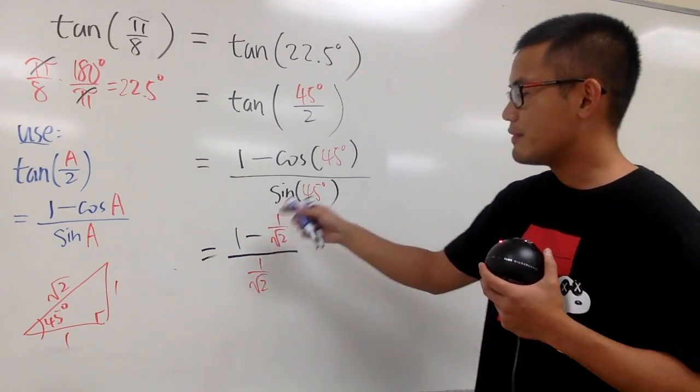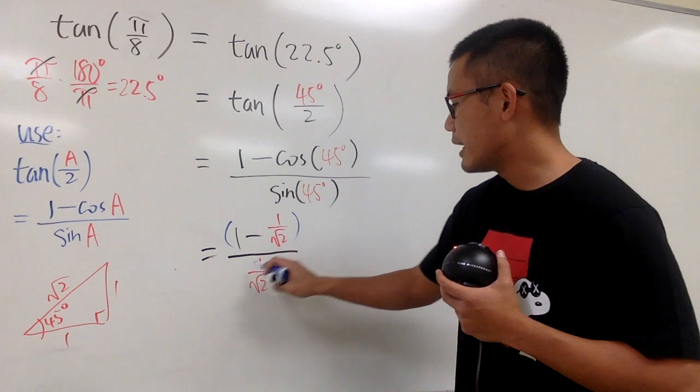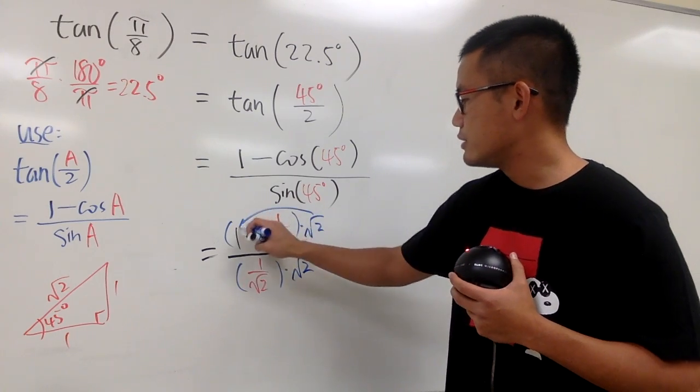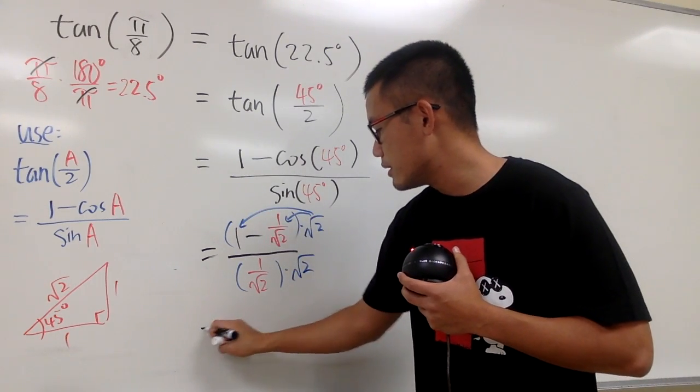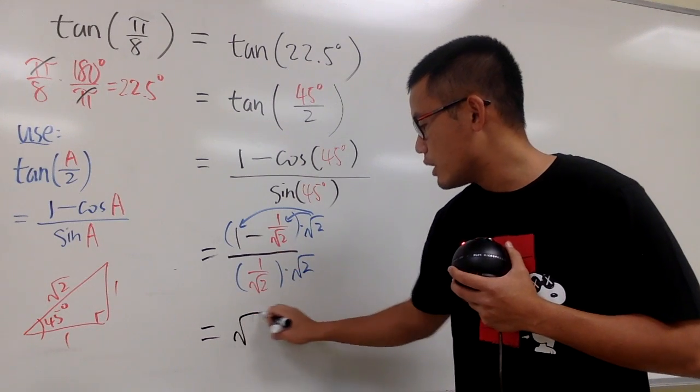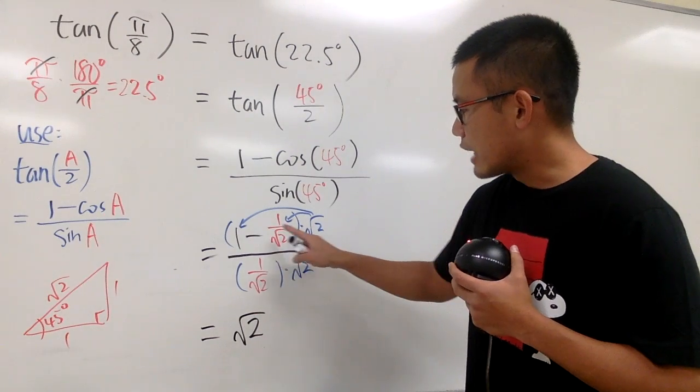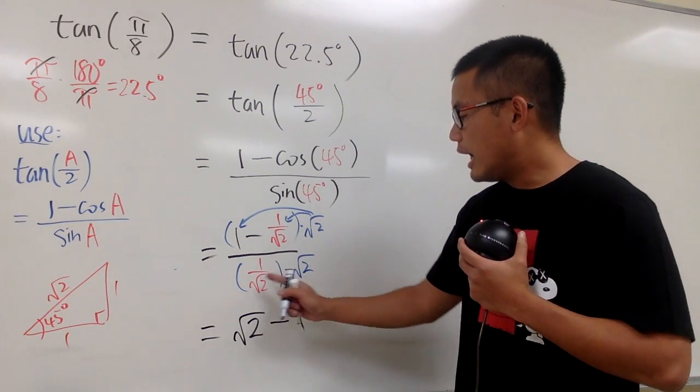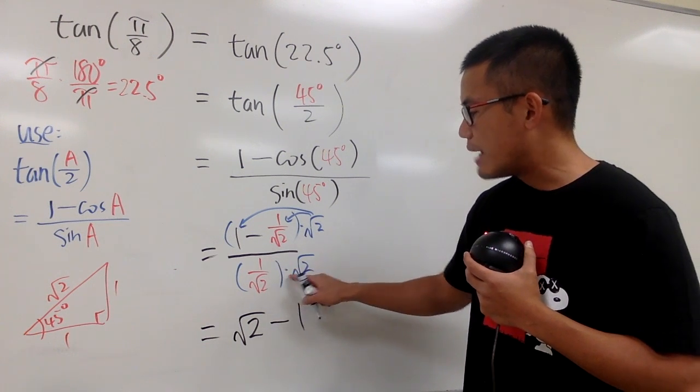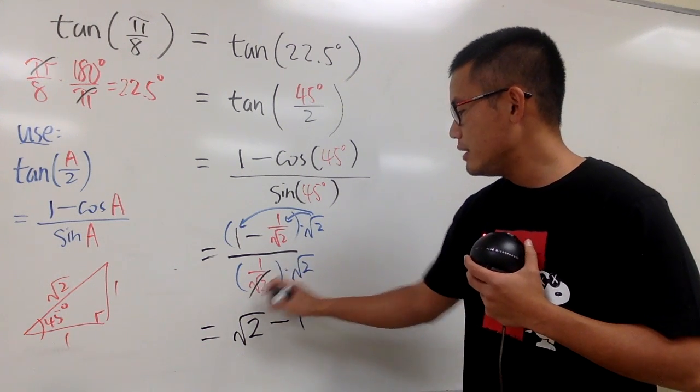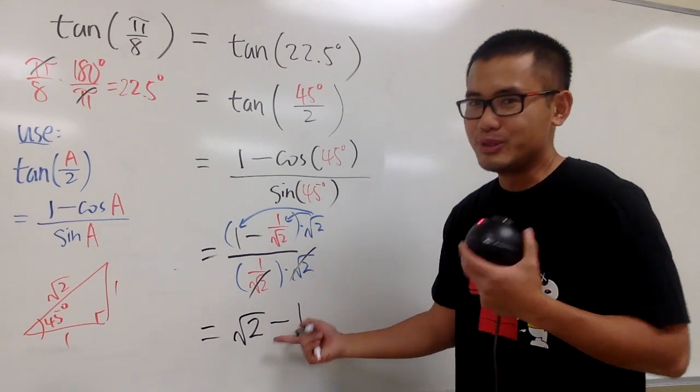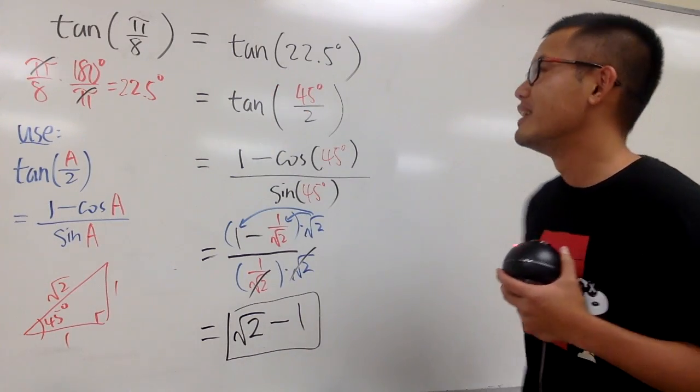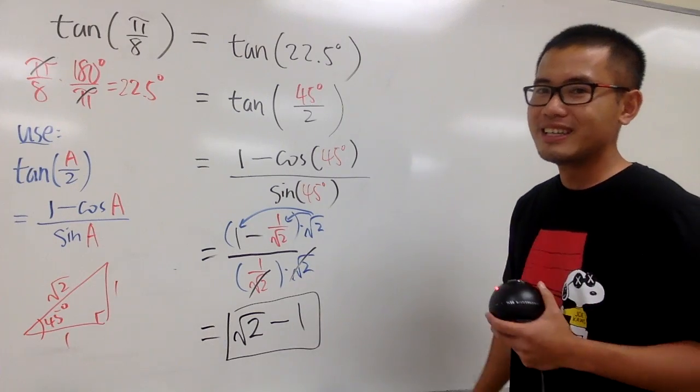We have complex fractions, so multiply the top and bottom by √2 and distribute. √2 times 1 is √2; √2 times negative 1 over √2 cancels, giving us minus 1. On the bottom, 1 over √2 times √2 cancels to 1. Overall, we have √2 minus 1 for tangent of π over 8, or tangent of 22.5 degrees. That's it.